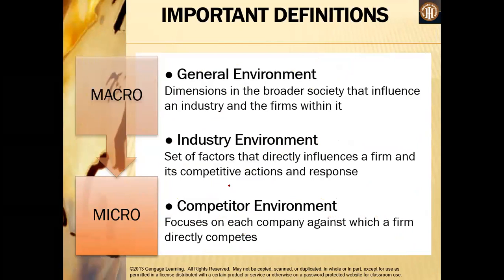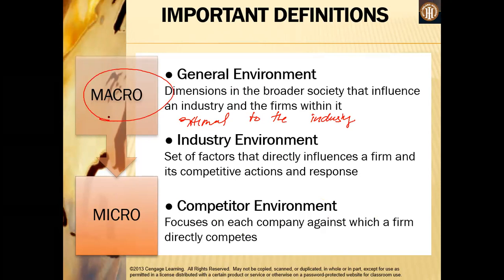The general environment refers to factors that are external to an industry and are usually beyond the firm's control, and they affect the firm's strategy. Key keywords here: they are external to the industry, which means the general environment is part of the macro level. Your industry and competitor environment is part of your micro level. The general environment is beyond the firm's control — these are uncontrollable items you must take into consideration when creating your strategy.